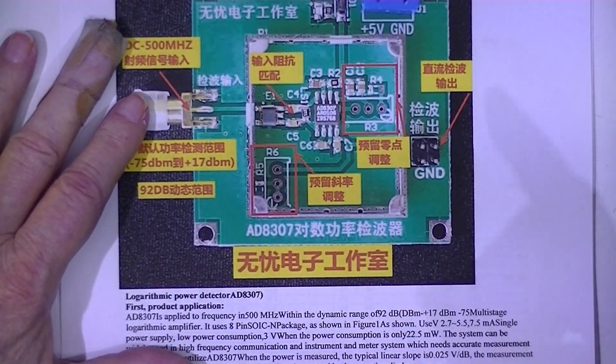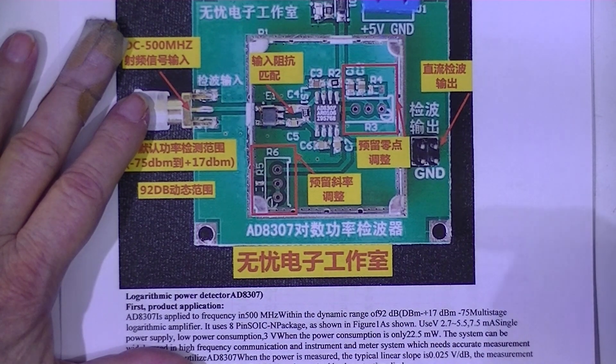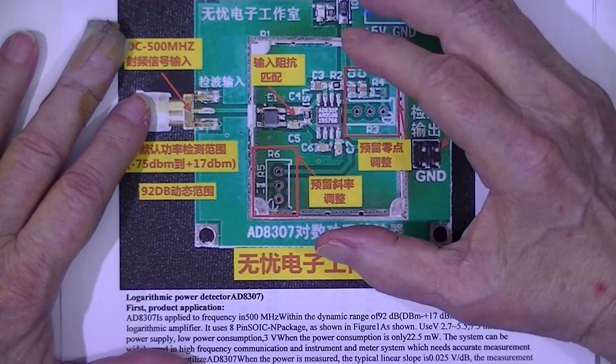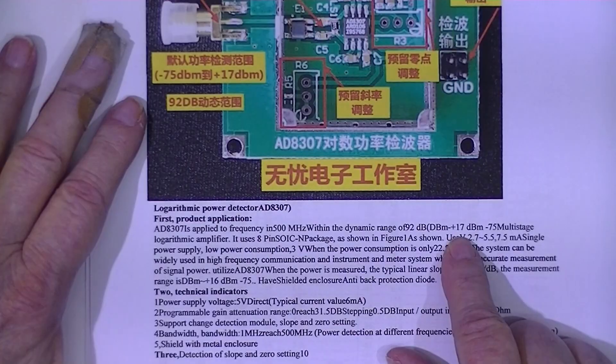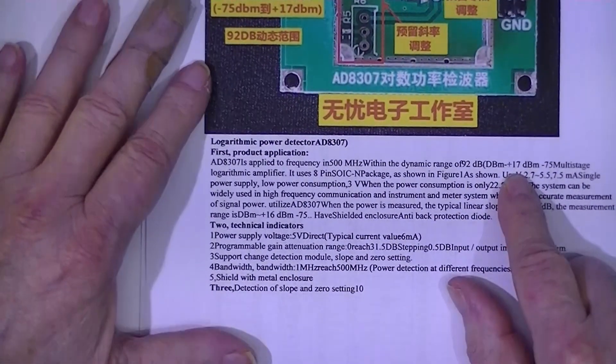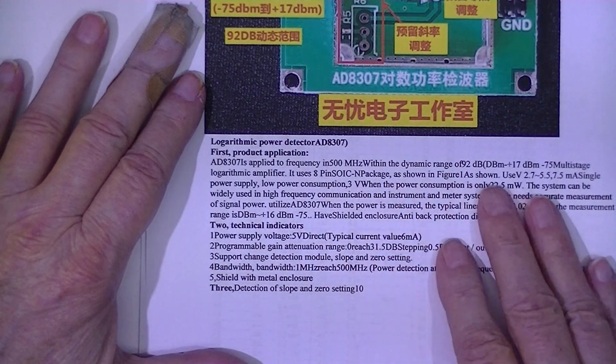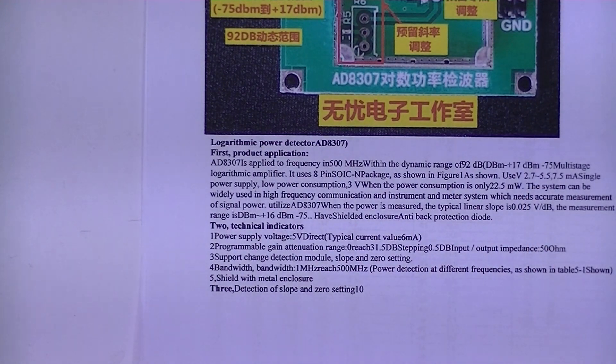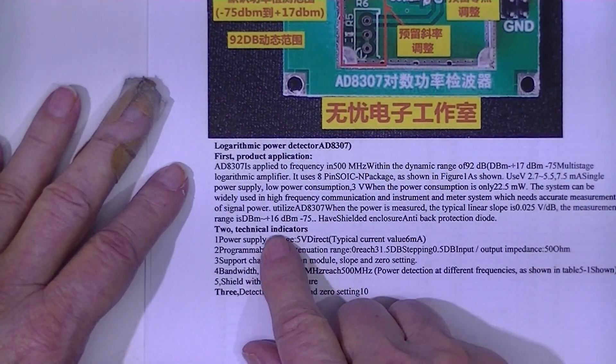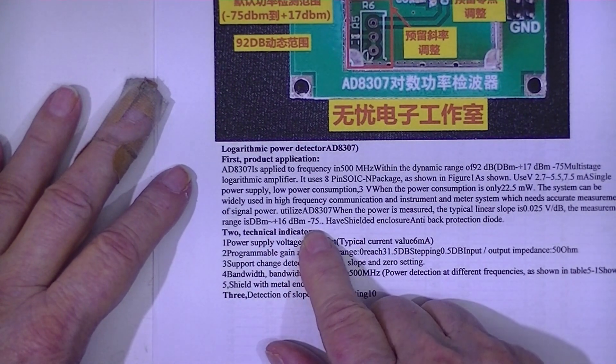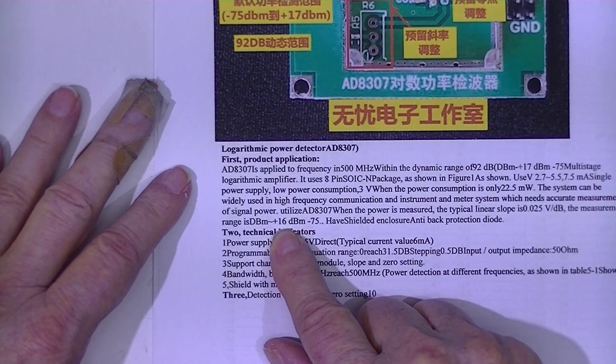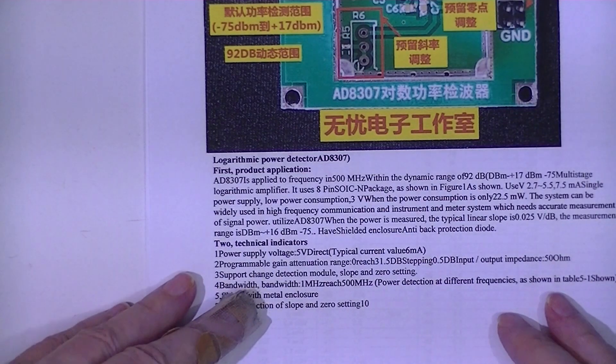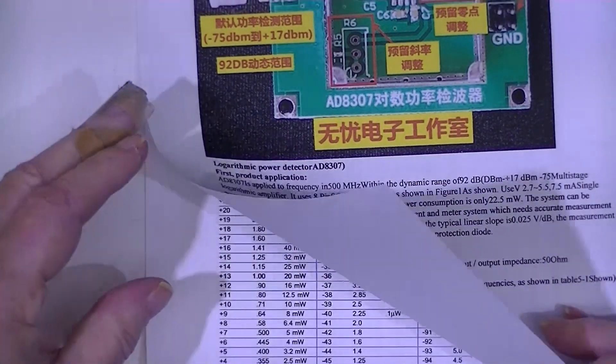And looking at the spec sheet for the AD8307, pin 1 and 8 are the high and low inputs. Now there is some sort of explanation here. I use a 2.7 to 5.5 volt supply. And the measurement range is minus 75 to plus 16 dBm, although here it says 17.